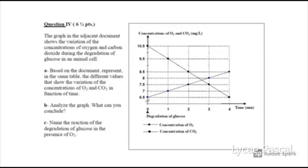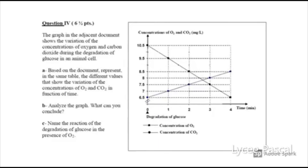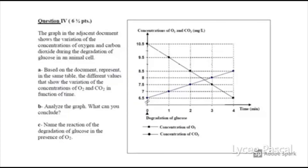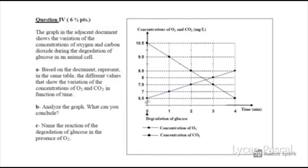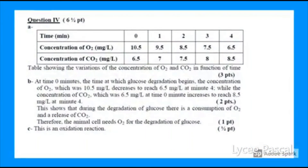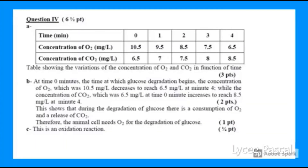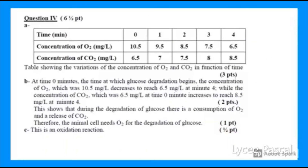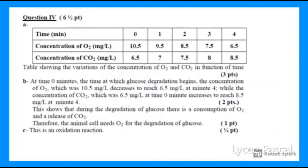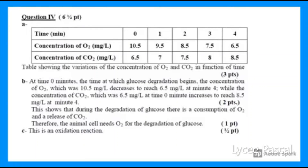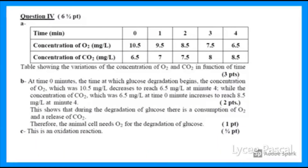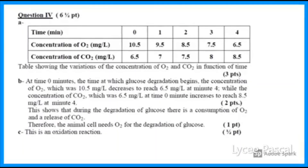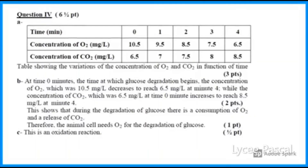For the last two questions: analyze the graph and state your conclusion, then name the reaction of glucose degradation in the presence of oxygen. To analyze, write the variable factor and the result — since it's a graph, write increase, decrease, or constant, taking the first and last points. At time 0 minutes, the concentration of oxygen, which was 10.5 mg per litre, decreases to reach 6.5 mg per litre at minute 4. The concentration of carbon dioxide, which was 6.5 mg per litre at time 0, increases to reach 8.5 mg per litre at minute 4. Conclusion: the animal cell needs oxygen for the degradation of glucose. Finally, this is an oxidation reaction.